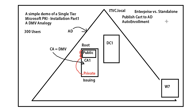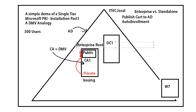What we're going to do in this video demonstration is demonstrate installing an enterprise CA — specifically what's called an enterprise root CA. That means he knows about Active Directory, and he's also going to get what's called a public key and a private key. During the installation of the CA, he generates a certificate and inserts his public key into that certificate.